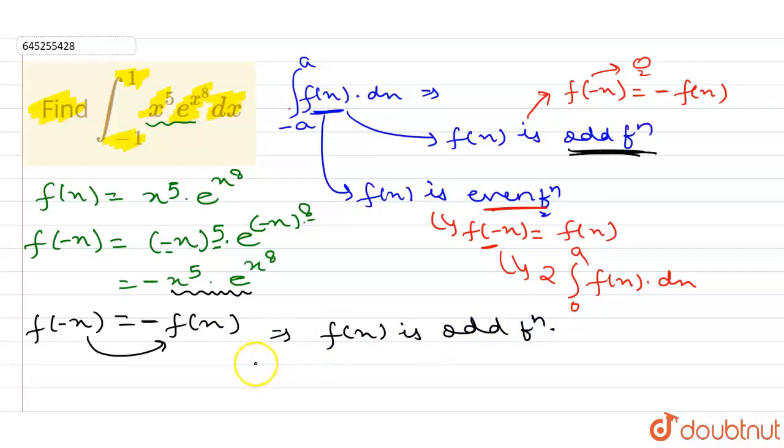So the given integral, I equals integral from minus 1 to 1, x power 5 into e power x power 8 dx, equals 0.